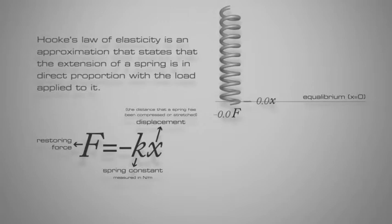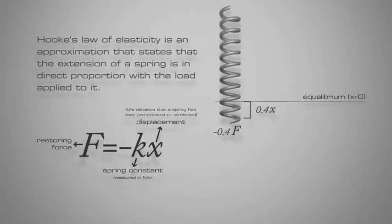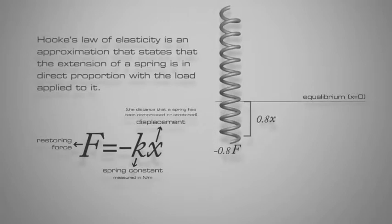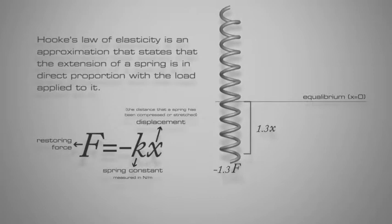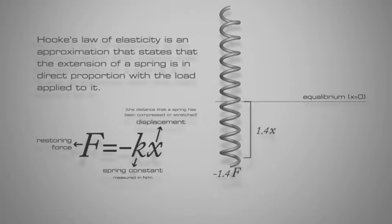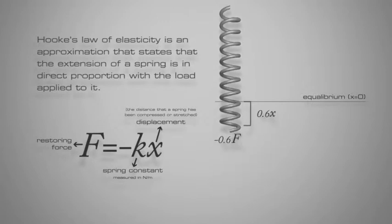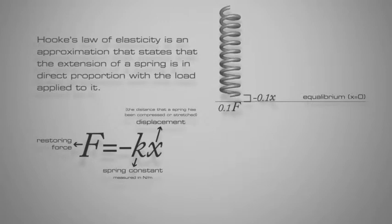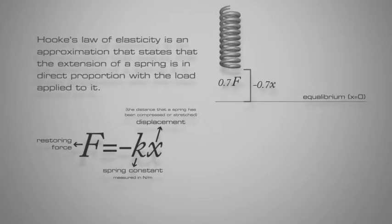The most commonly encountered form of Hooke's law is probably the spring equation, which relates the force exerted by a spring to the distance it is stretched by a spring constant k, measured in force per length. The negative sign indicates the force exerted by the spring is in direct opposition to the direction of displacement.